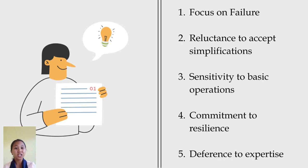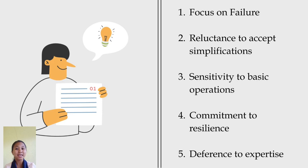Wick and Sutcliffe in 2001 introduced five processes of mindful school to promote in-school organization. First, focus on failure. Second, reluctance to accept simplification. Third, sensitivity to basic operations. Fourth, commitment to resilience. And lastly, deference to expertise.